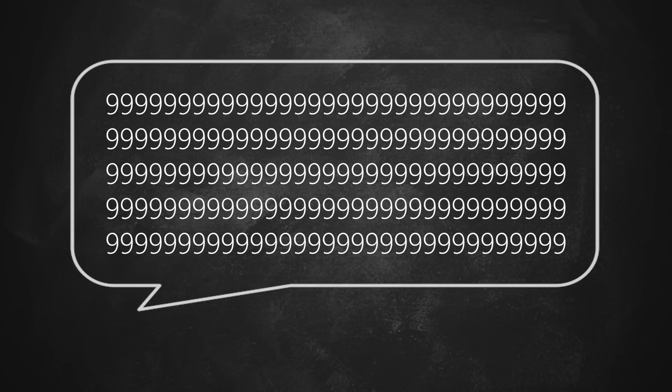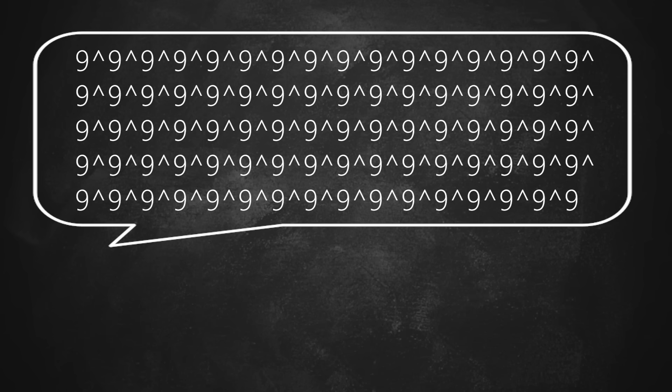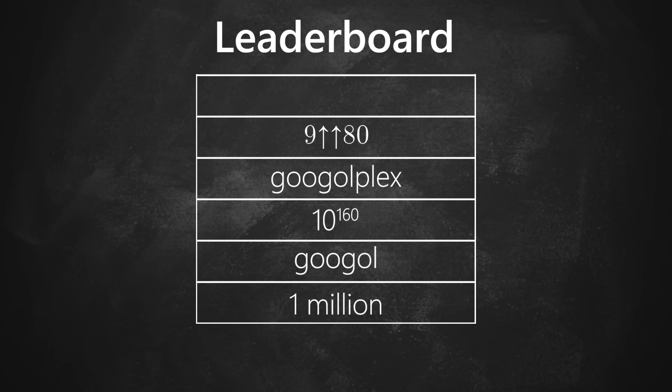Naively, we could just fill up the whole thing with 9s, and that gives us a number about 10 to the 160. So we'll add that to the leaderboard. But obviously, we can do better than that. I mean, I was able to write it on the leaderboard in way less space. If we include basic math symbols, we could instead make a power tower like this, which is already unfathomably large. But this might as well be zero compared to where we're going.